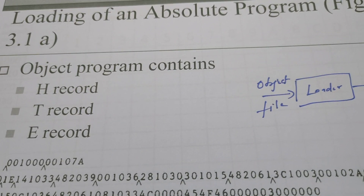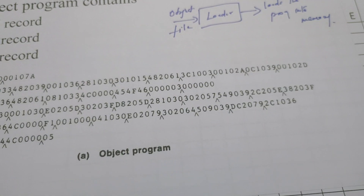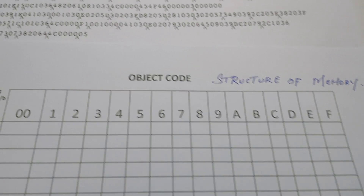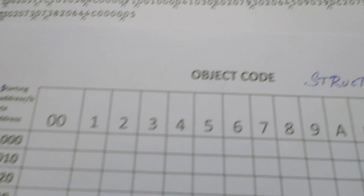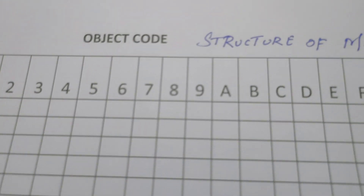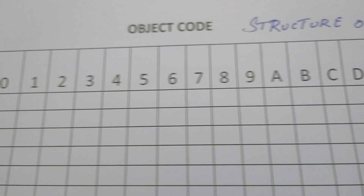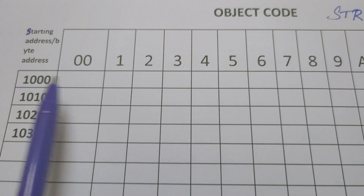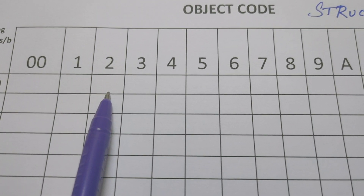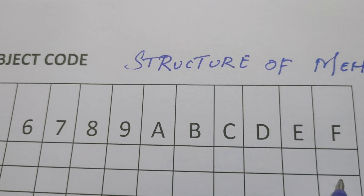Now we are going to understand how the object codes are loaded into the memory. This is the structure of the memory where every column is an address: 0, 1, 2, 3, 4 up to F. The starting address is 1000, so locations go from 1000 to 100F, then 1010 to 101F, and so on.